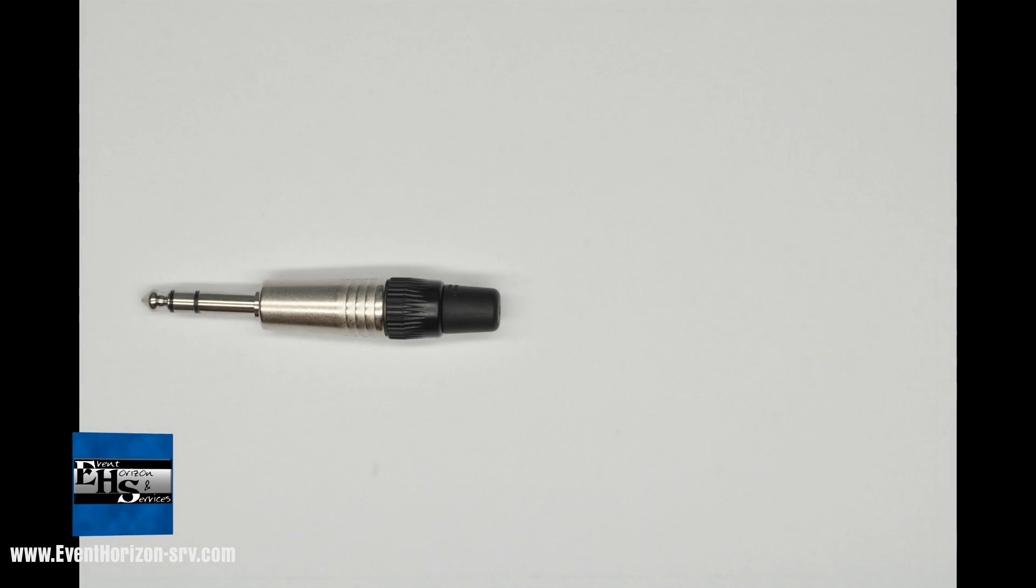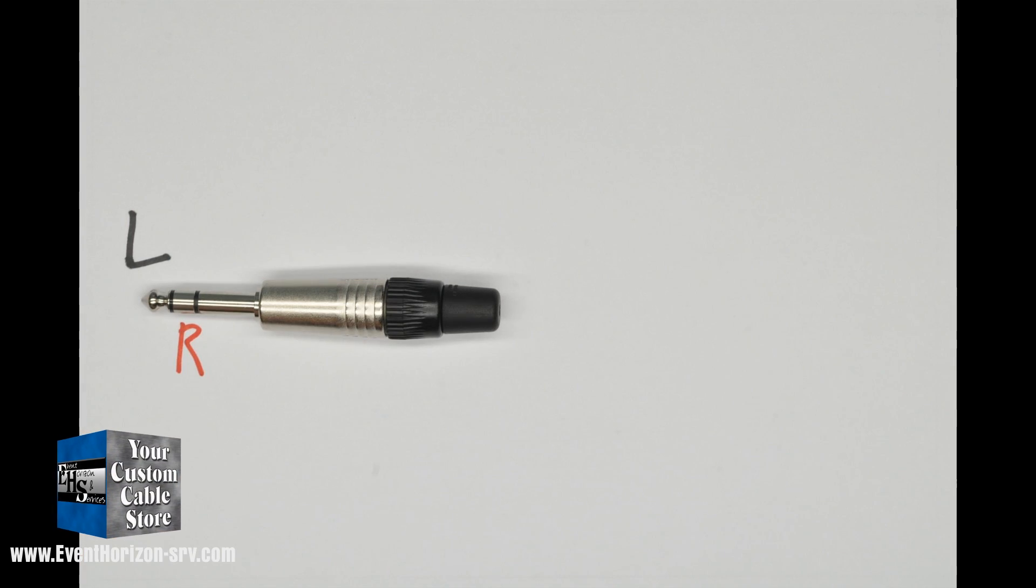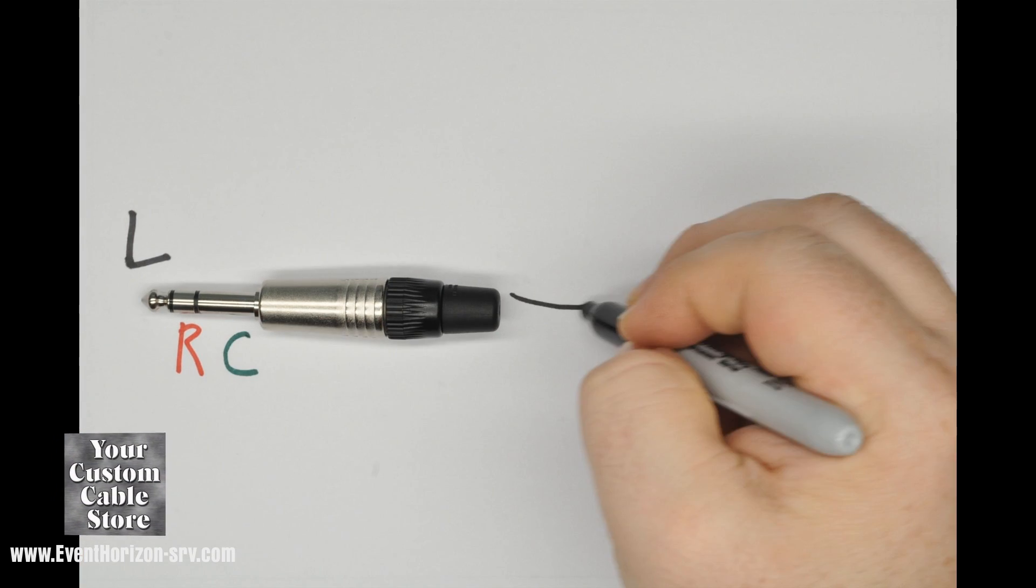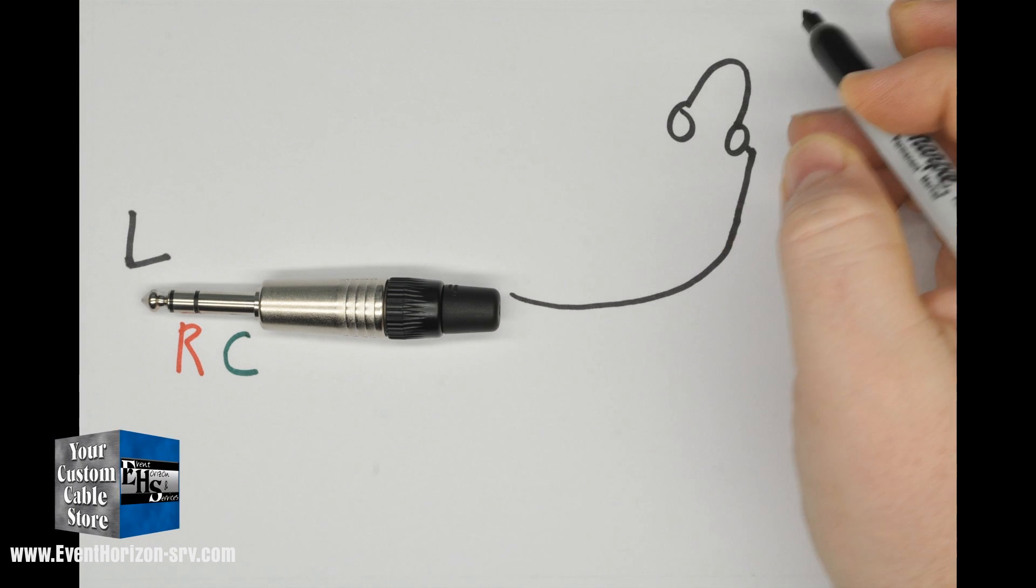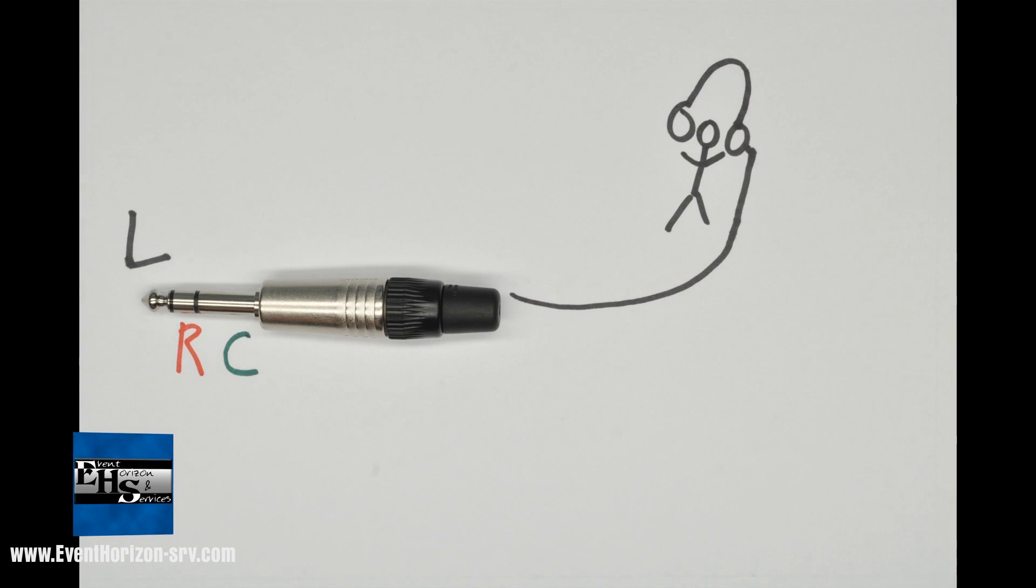The TRS connector is also used for headphone applications, where the tip is used for the left signal, the ring is used for the right signal, and the sleeve is used for common.